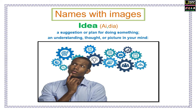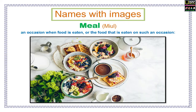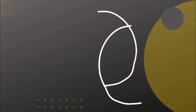E as in Names with images. Here I have a word with its pronunciation, explanation and an image for you. Idea: a suggestion or plan for doing something, or an understanding, thought or picture in your mind. Meal: an occasion when food is eaten, or the food that is eaten on such an occasion.